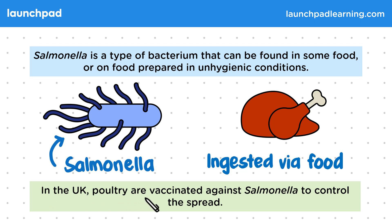In the UK, poultry are vaccinated against salmonella to control the spread. For the exam, you need to remember that we vaccinate poultry against salmonella in the UK. So why do we have to take this measure, and why is this bacteria a potential issue?